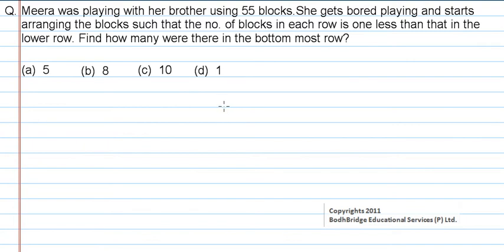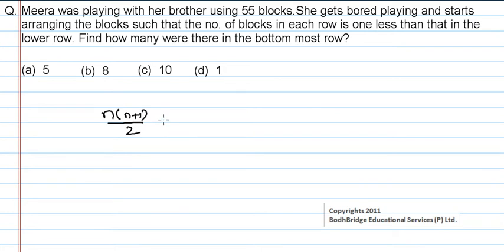We have a total of 55 blocks. She is arranging them row-wise such that each row consists of 1 less than the lower row. Now, 55 is nothing but n(n+1)/2, which is the sum of the first 10 natural numbers: 10 × 11 / 2 = 55.